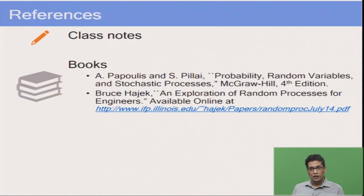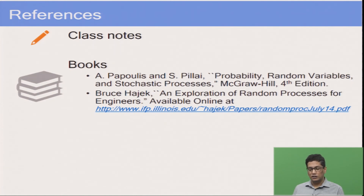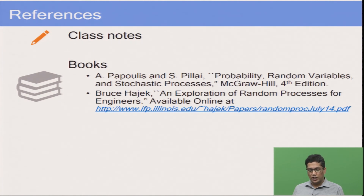These are the references for this course. Most of the content will be in the class notes, so if you follow them you will get the complete content of this course. For extra study, two reference books are recommended: one is by Papoulis and Pillai — Probability, Random Variables and Stochastic Processes, fourth edition — and the second is a freely available online book by Bruce Hajek, An Exploration of Random Processes for Engineers, with a link provided.